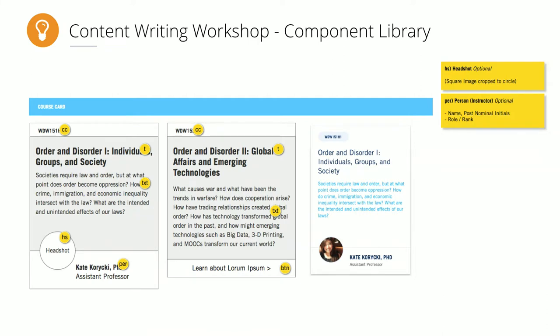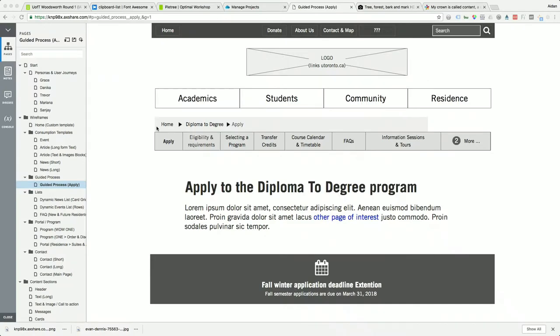Another part of the content writing workshop is a review of what we call the component library. Here's a piece of the wireframes — a user interface component we called a 'course card.' You can see the wireframe version on the left, what it looks like in creative comps on the right, and the instructor field in the middle as an optional piece of that component. We review with everyone all the components they can use to construct the website.